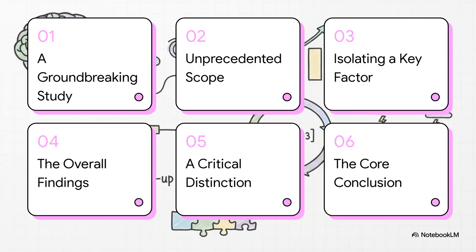Here's our game plan for breaking this all down. First, we'll look at what makes this study so groundbreaking. Then, we'll get into its incredible size and scale. After that, we'll see how the researchers zeroed in on a really key factor. Then, we'll hit the main results, look at a super important distinction they made, and wrap it all up with the study's big takeaway.